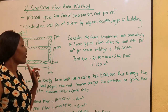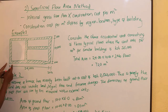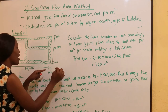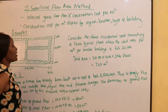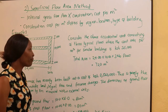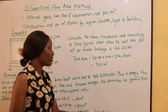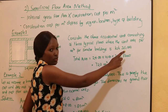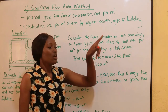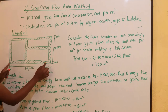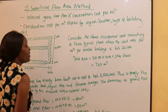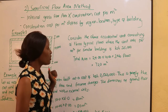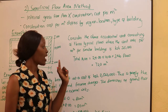Here is an example for calculating the floor area method. You are given a plan where the internal length is 24,000mm, the walls are 200mm, the internal width is 10,000mm, and the walls on that side are also 200mm. The task is to consider the above residential unit consisting of three typical floors — ground, first, and second — where the unit rate per meter squared for similar buildings is 35,000. Taking the internal dimensions of 24m by 10m multiplied by three floors gives a total floor area of 720 meters squared.